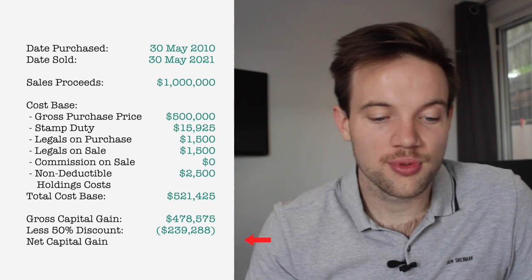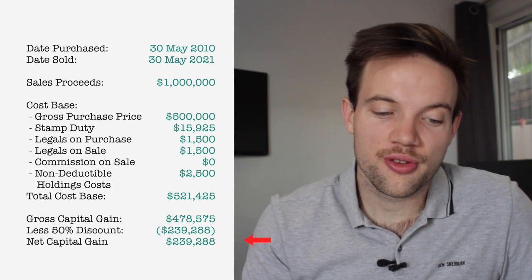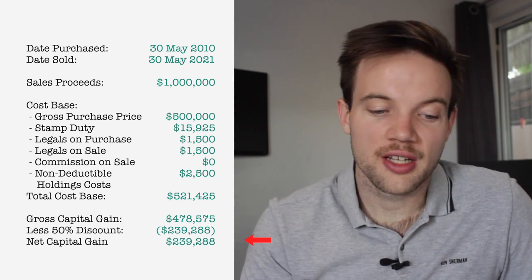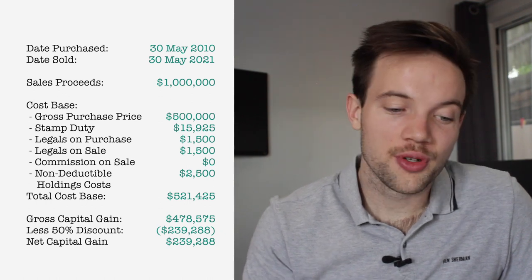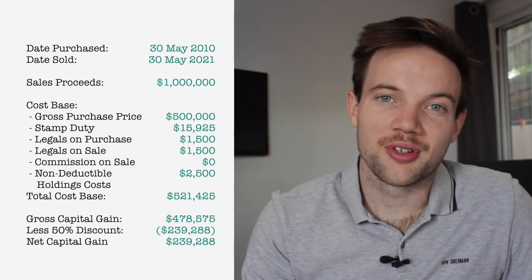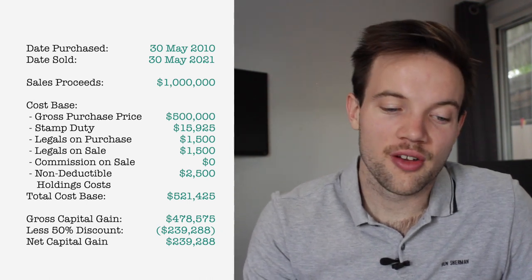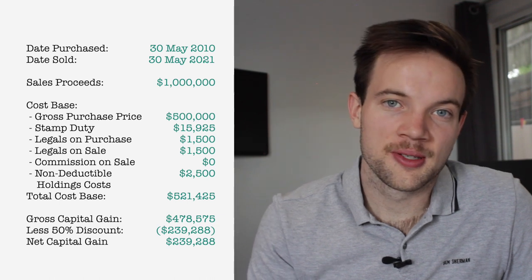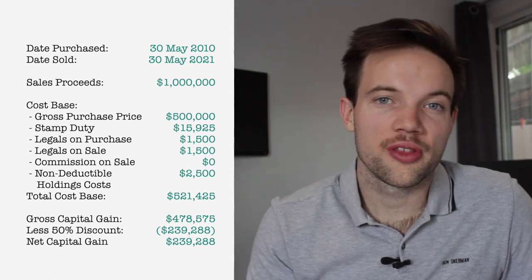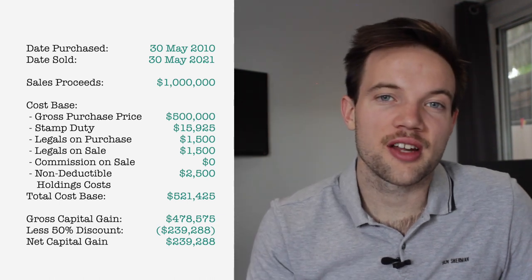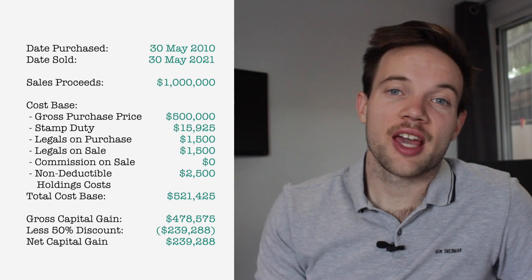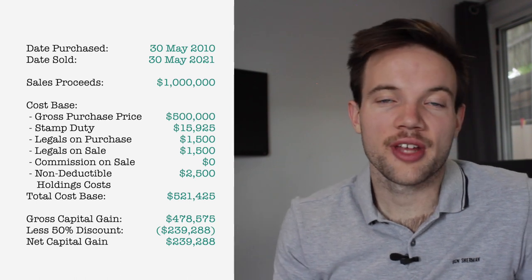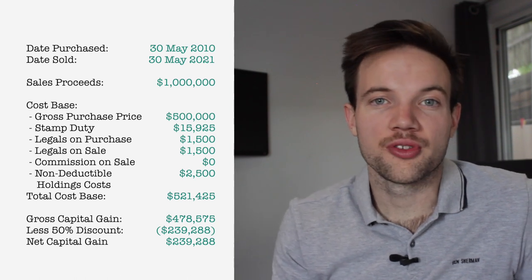In our example the net capital gain is $239,287.50 — approximately $240,000. That capital gain gets added to your tax return and you will pay tax on it at your marginal tax rate.